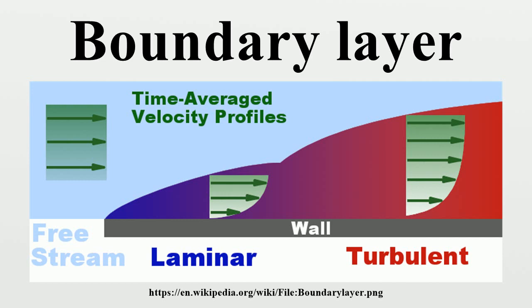A surface can have multiple types of boundary layers simultaneously. The viscous nature of airflow reduces the local velocities on a surface and is responsible for skin friction. The layer of air over the wing's surface that is slowed down or stopped by viscosity is the boundary layer. There are two different types of boundary layer flow: laminar and turbulent. The laminar boundary is a very smooth flow, while the turbulent boundary layer contains swirls or eddies. The laminar flow creates less skin friction drag than the turbulent flow, but is less stable.